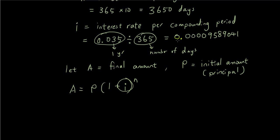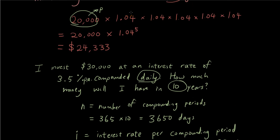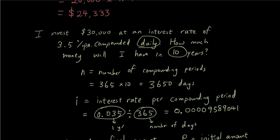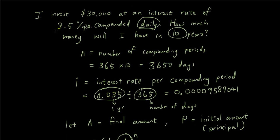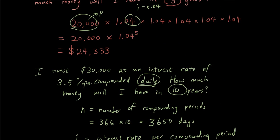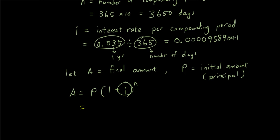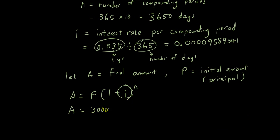We're multiplying by (1 + i) to the power of n. Here i is 0.0000095890 — the interest rate per compounding period. In the previous question i was 0.04, but now because we're compounding daily, i equals 0.035 divided by 365. Adding i to 1 gives 1-point-something, so A equals P (which is 30,000) times (1 + 0.035/365) to the power of n.